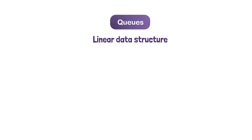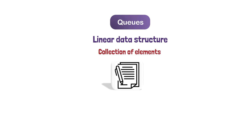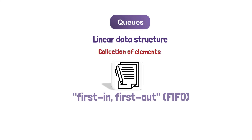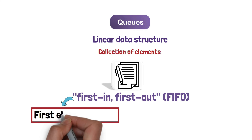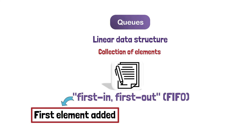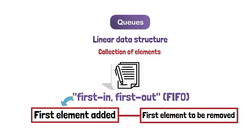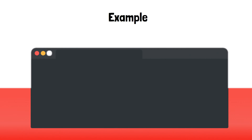Queues. A queue is a linear data structure that stores a collection of elements in a specific order. Queues operate on a first in, first out (FIFO) basis, meaning that the first element added to the queue is the first element to be removed. Here's an example of how you might implement a queue in a programming language like Python.